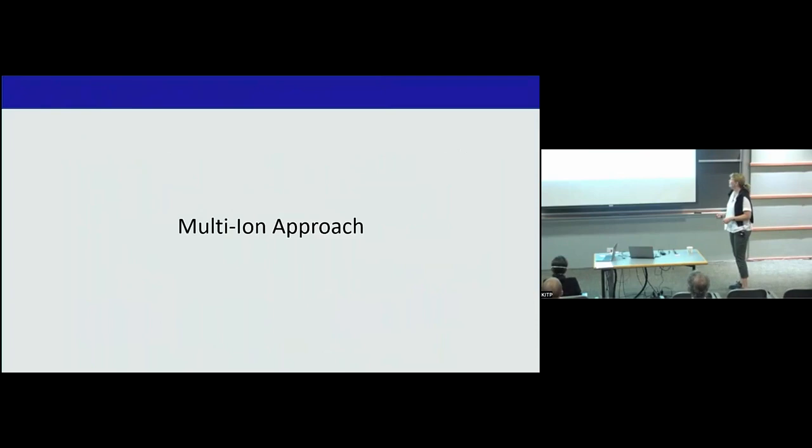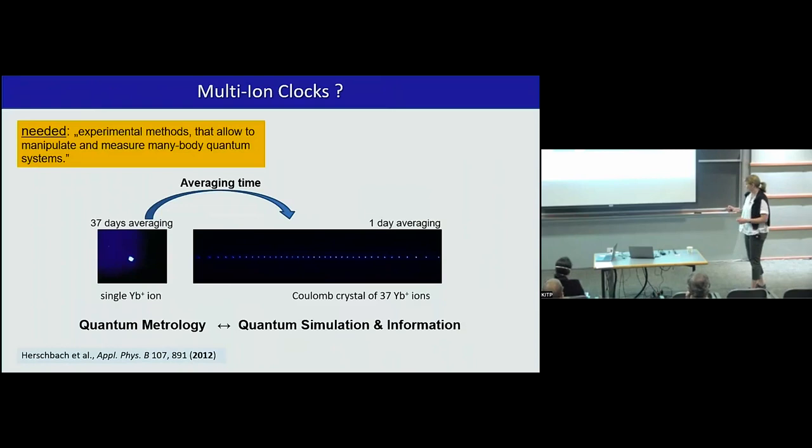So this is how we started out with our multi-ion approach. We published that in Applied Physics in 2012. We proposed that we would love to have new methods that allow us to manipulate and measure many body quantum systems, scale it up to a whole string, maybe in the future, two-dimensional areas of many ions, and use them for precision metrology. If we have that under a good level of control, classically first, then we can dream of entangling them, squeezing them, maybe trying the Heisenberg limit.